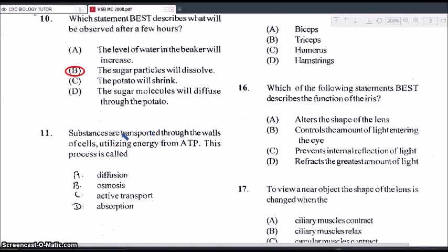So therefore, you should expect the answer to be B. The sugar particles will dissolve. So once that water gets in and mixes up with the sugar, the sugar will eventually dissolve. Okay, question 11. Substances are transported through the walls of cells utilizing energy from ATP. This process is called, is it A, diffusion, B, osmosis, C, active transport or D, absorption. So the correct answer for this would be active transport. From the time you hear energy is involved, think active transport. Diffusion and osmosis are passive forms of transport. They do not require energy at all. They move substances naturally on their own without any use of energy. So diffusion and osmosis is definitely not, and is definitely not absorption. So it's active transport.